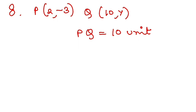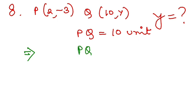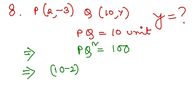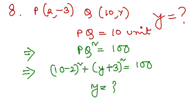Now let's move on to Question Number 8. It is easier. P is given as (2, minus 3), Q is given as (10, y), and the distance PQ is also given as 10. You have to find the value of y. Apply the distance formula: PQ squared equals 10 squared, which is 100. So (10 minus 2) whole square plus (y plus 3) whole square equals 100. Solve this to find y. You should be careful — you will get two values of y from the quadratic equation.